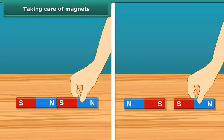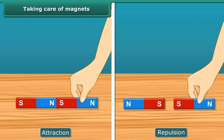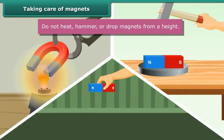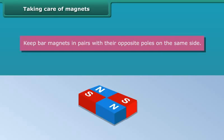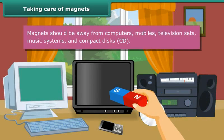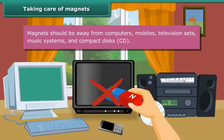We are now aware of the attraction and repulsion properties of a magnet. To keep magnets safe and in working conditions, follow these guidelines. Do not heat, hammer, or drop magnets from a height — they will lose their property if done so. Keep bar magnets in pairs with their opposite poles on the same side and use wood to separate them. Keep a piece of iron across the poles of a horseshoe magnet. Magnets should be kept away from computers, mobiles, television sets, music systems, and compact discs.